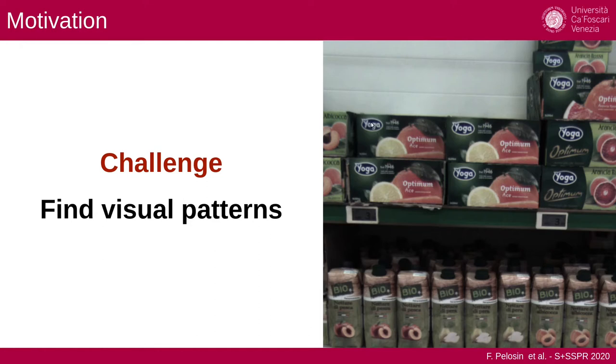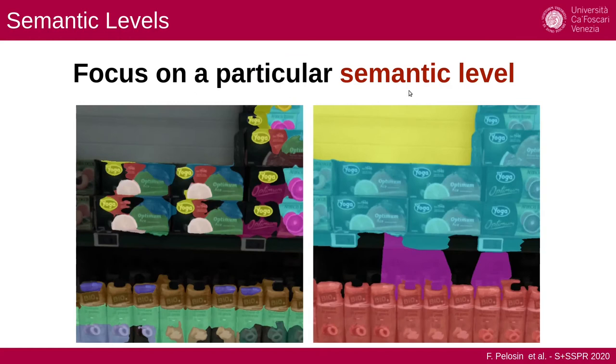For example, one can say that this logo here is a visual pattern, or the Y composing this logo is a visual pattern, or the whole product is a visual pattern. So we have to focus our interpretation on a particular semantic level, because each scale gives us a new semantic.